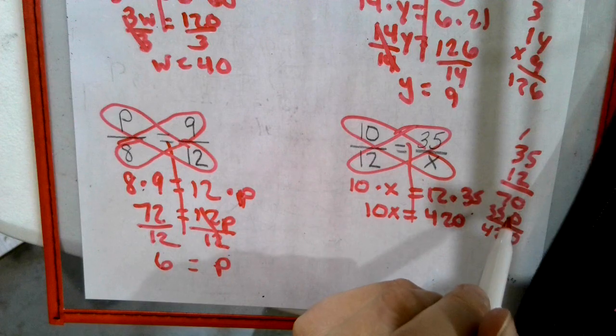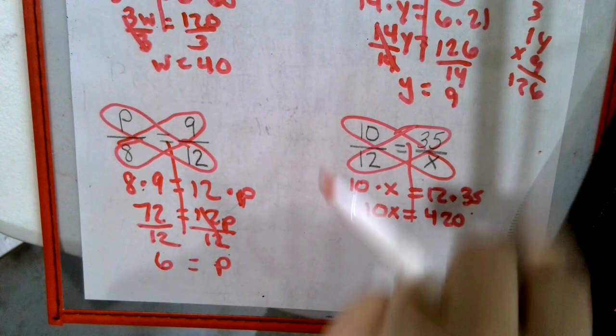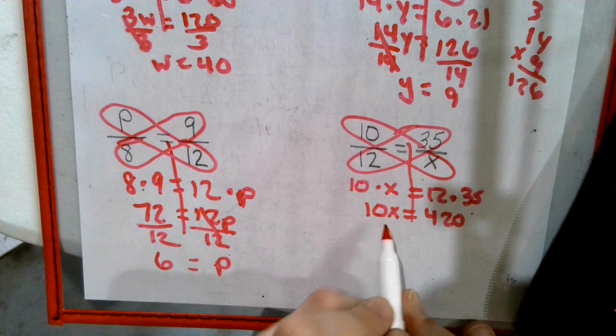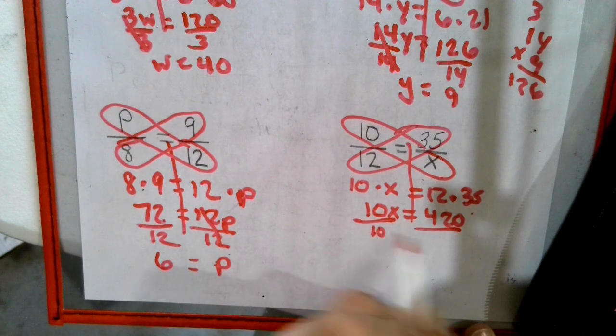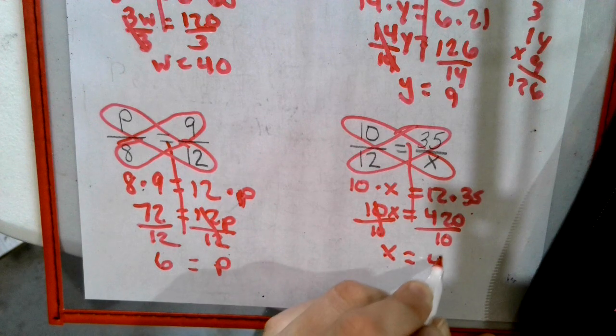I'm just going to get rid of that math. If you need it, you can go back to it. Divide by 10. X equals 42.